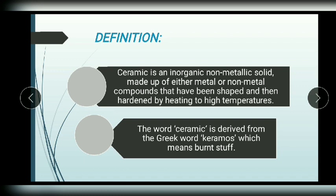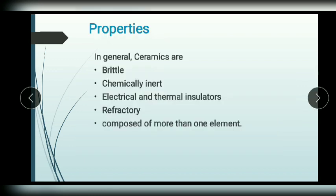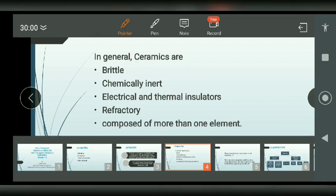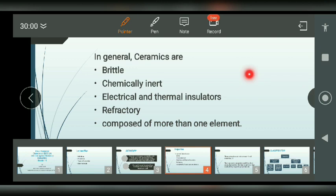Chemically, these ceramics may be oxides, carbides, nitrides, borides, silicates, etc. The bonding in ceramics is either totally ionic or a combination of ionic and covalent. Now let us see the general properties of ceramic materials.